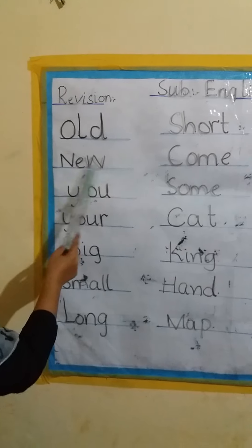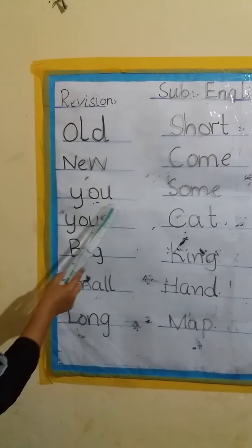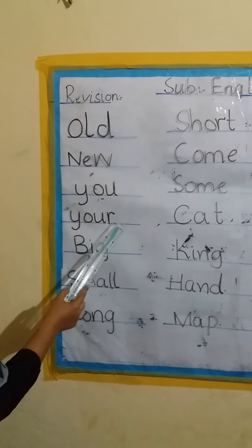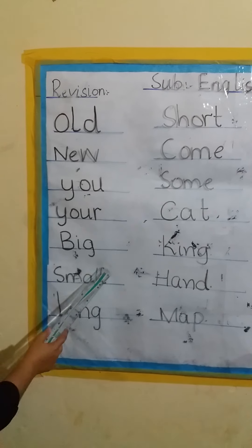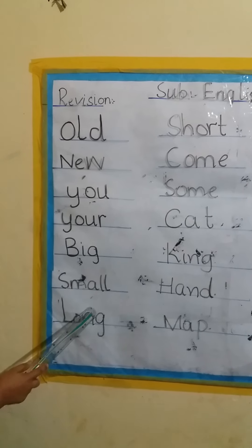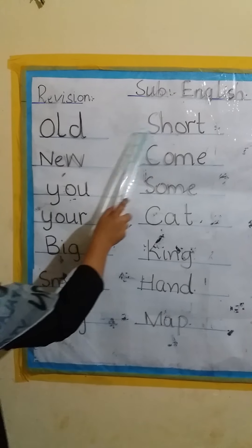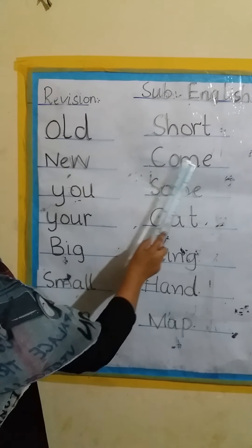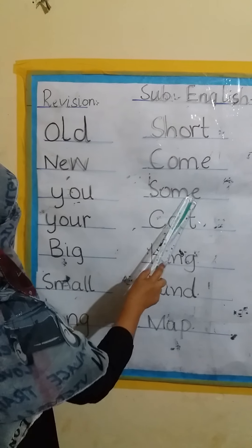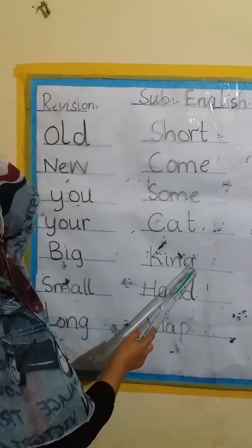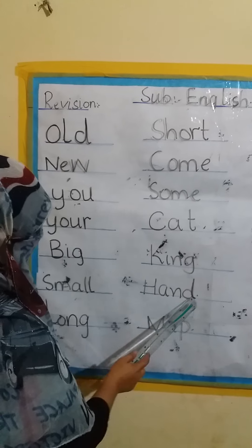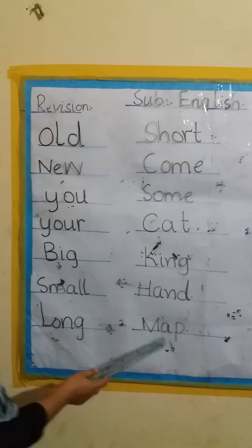Old, new. You, your. Big, small. Long, short. Come, some. Cat. King, hand. Map.